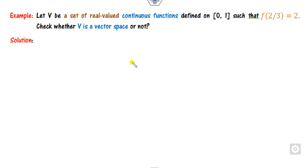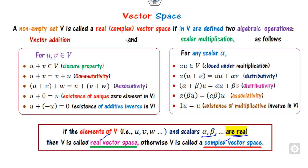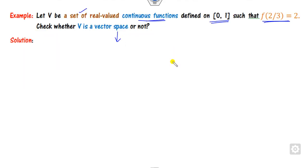For example, let V be the set of all continuous functions defined on [0,1] such that f(2/3) = 2. Can you say this is a vector space? To prove whether it is a vector space, we must satisfy all ten properties, but the most important first step is to check the two closure properties.